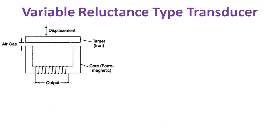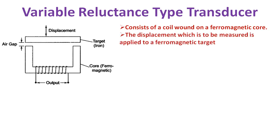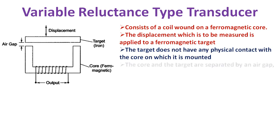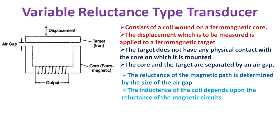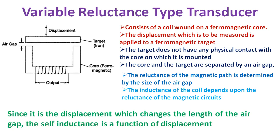Then we have the variable reluctance type of transducer. It consists of a coil wound on a ferromagnetic core. The displacement to be measured is applied to the ferromagnetic target, which has no physical contact with the core. The core and the target are separated by an air gap, as seen here. The reluctance of the magnetic path is determined by the size of the air gap, and the inductance of the coil depends on the reluctance of the magnetic circuit. When the target is near the core, the air gap is small and therefore the self-inductance is large. When the target is away from the core, the reluctance is large, resulting in a smaller self-inductance value. Hence, the inductance of the coil is a function of the distance of the target from the core — the length of the air gap — and since displacement changes the air gap length, the self-inductance is a function of displacement, albeit a non-linear one.